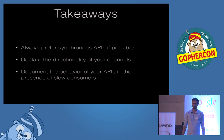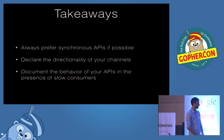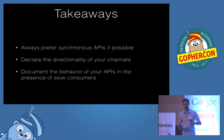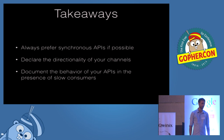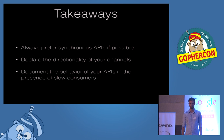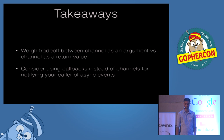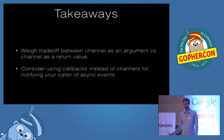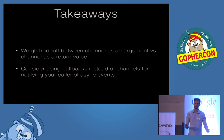To recap: always prefer synchronous APIs if possible. Declare the directionality of your channels — even if it's a private API or just a channel inside a function. Document the behavior of your APIs in the presence of slow consumers; there is no way to know what the API does if you don't document it. Weigh the trade-offs between taking a channel as an argument versus returning one. And consider using callbacks instead of channels — or channels instead of callbacks — when making an API that notifies callers of async events. Thank you.